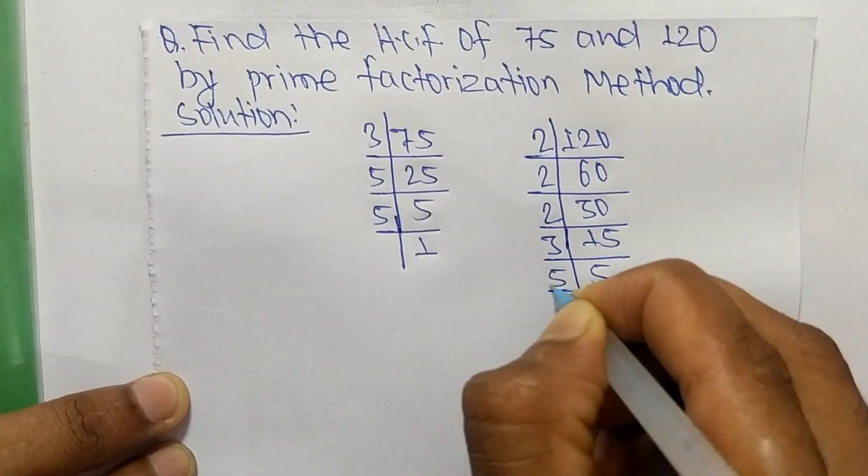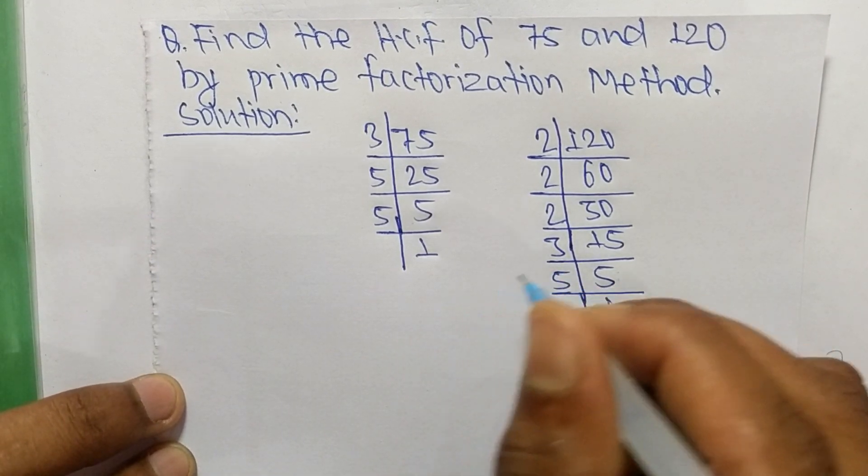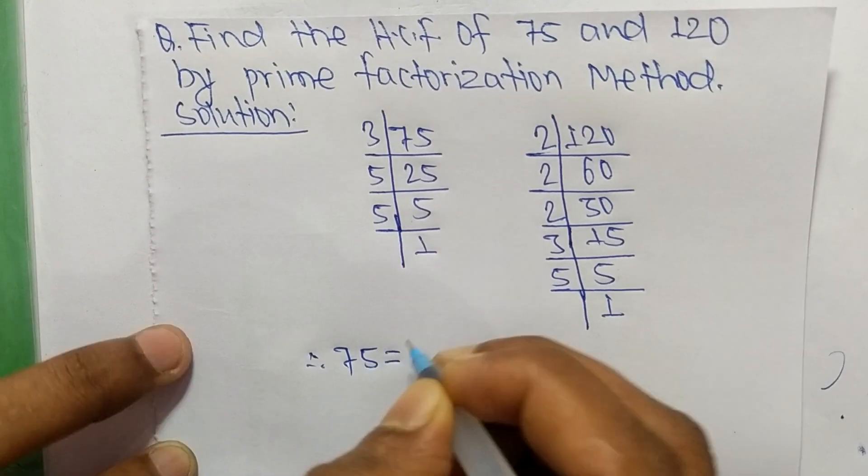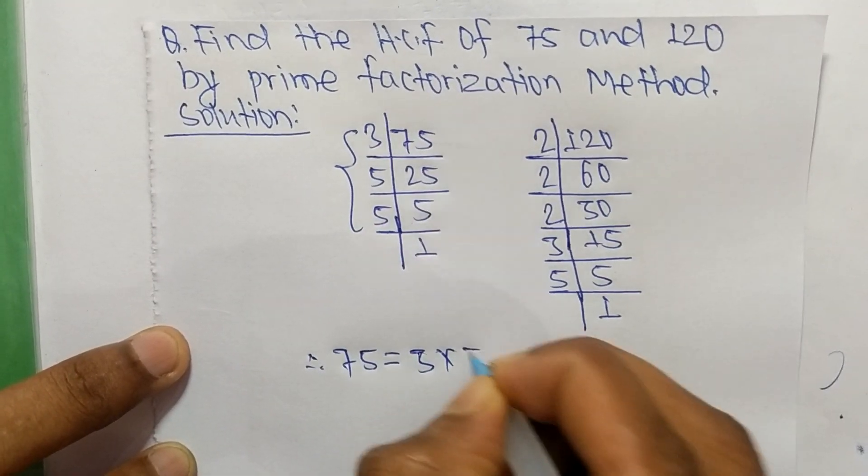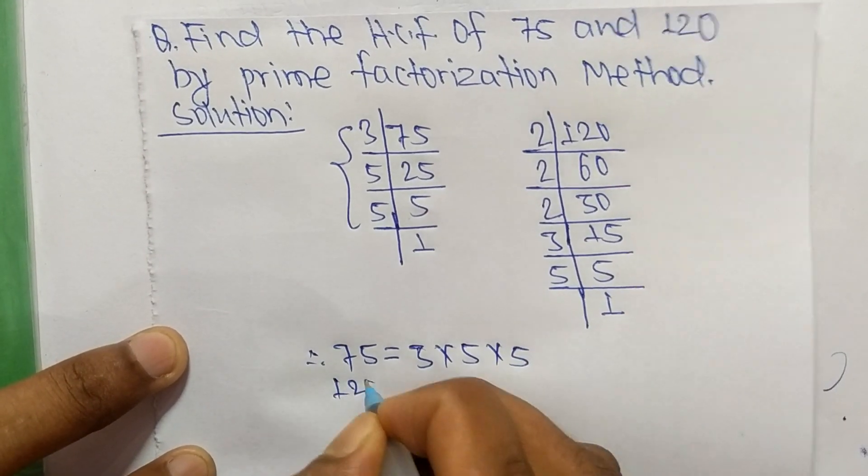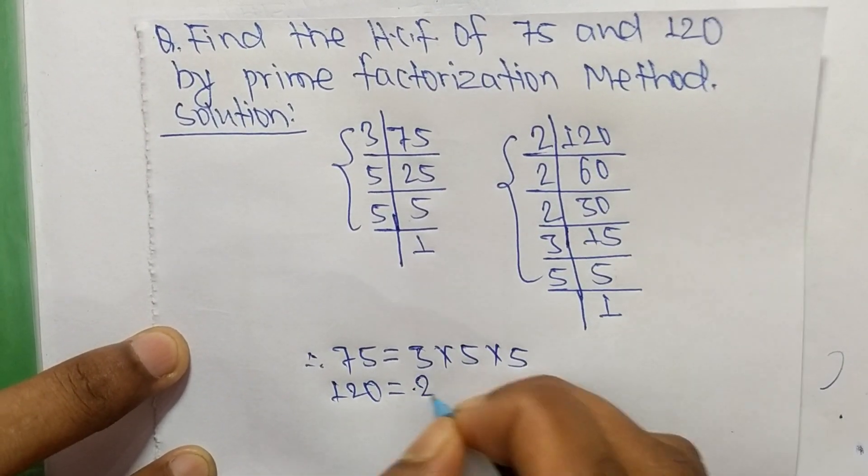From these prime factors we can write: 75 is equal to 3 times 5 times 5. Likewise, 120 is equal to 2 times 2 times 2 times 3 times 5.